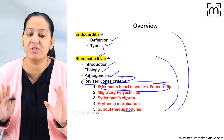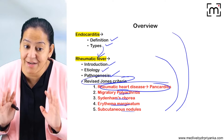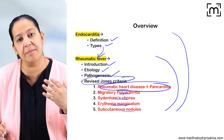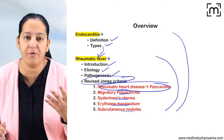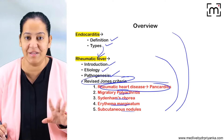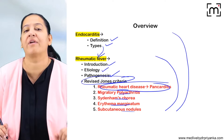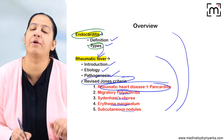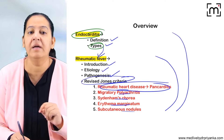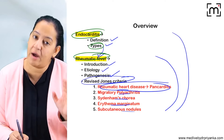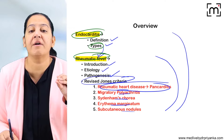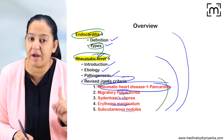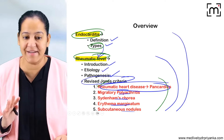My advice to all students: understand your question first in your university exam. If the question is on endocarditis, describe the four types and the pathogenesis of each. If they are asking on rheumatic fever, write down all five components. If they are asking about rheumatic heart disease, write down that component only. Write only what is relevant.